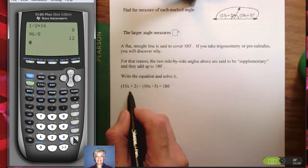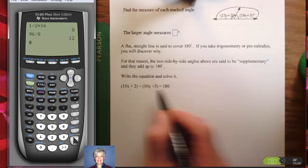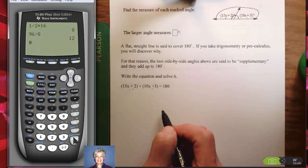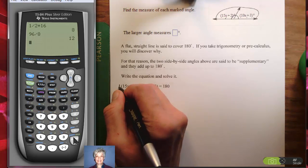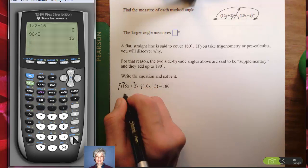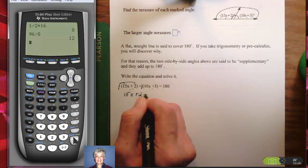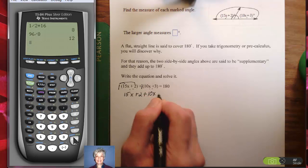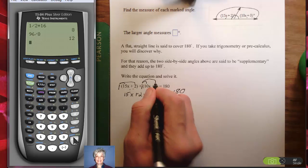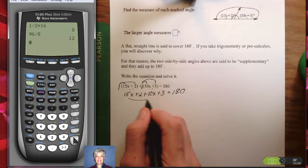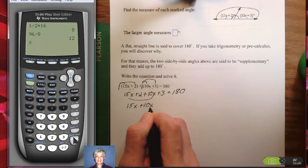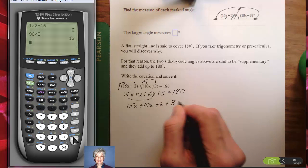So here we have 15x plus 2, which is this angle, and 10x plus 3, which is this angle. When you add them together, they add up to 180 degrees. Now look at the parentheses. There's an understood 1 in front of these parentheses, so when you distribute the 1 to the 15x and the 2, you'll get 15x plus 2 plus 10x plus 3. Now I'm going to add my like terms together, 15x plus 10x plus 2 plus 3 equals 180.